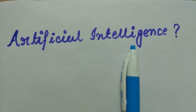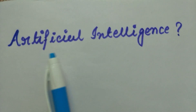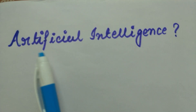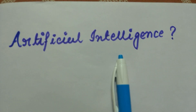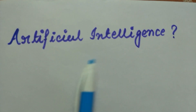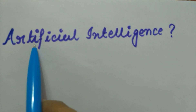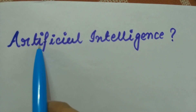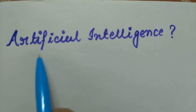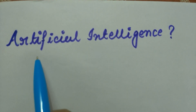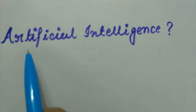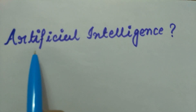As you can clearly see here, artificial intelligence is made up of two words: artificial and intelligence. Artificial is something which has not occurred naturally and is made up by human beings.